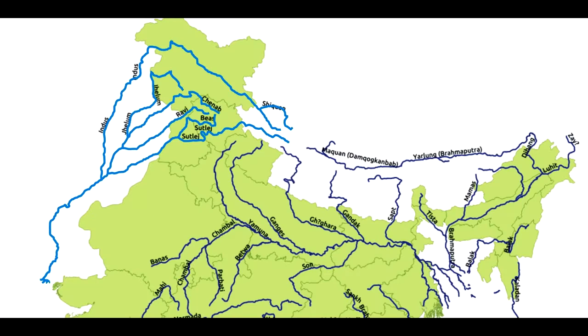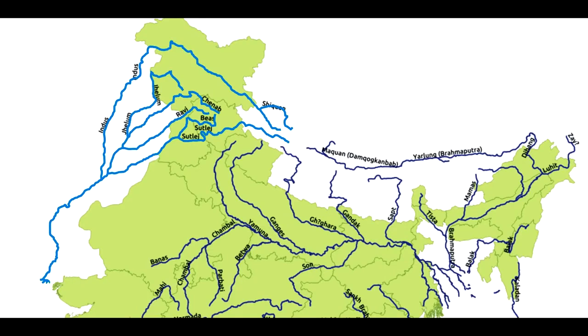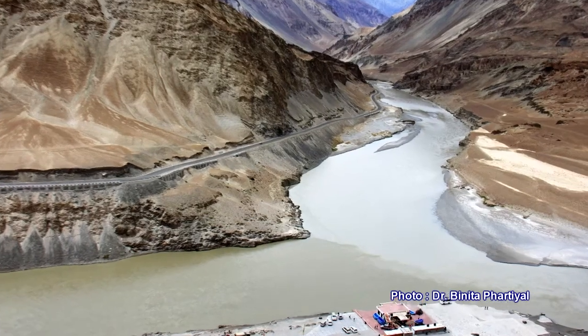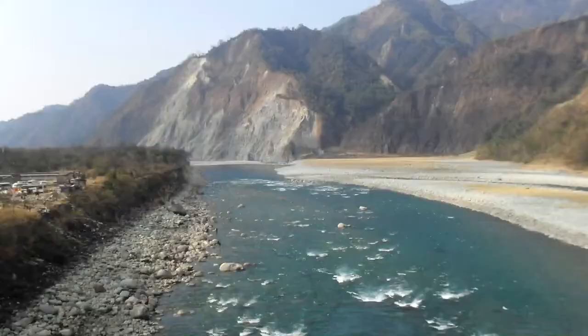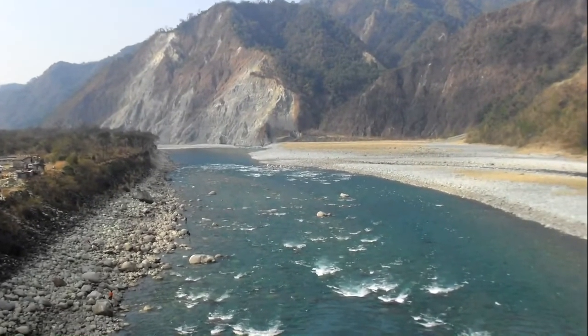This map shows the drainage pattern in the Himalayas. In the central part you see the Indo-Gangetic drainage — the Yamuna river on the left and the Ganga river on the right. Moving east towards Bengal, the Indo-Gangetic drainage pattern ends and is replaced by the Brahmaputra drainage. Looking at the full picture: in the west you have the Indus system, in the middle the Indo-Gangetic drainage, and in the east the Brahmaputra system.